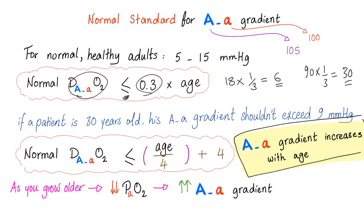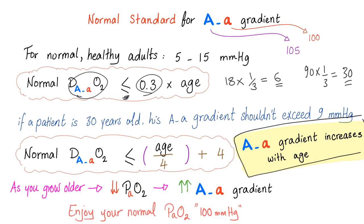There is another formula: age over 4 plus 4. As you grow older, your P(a)O2 decreases, therefore the AA gradient increases because the AA gradient is P(A)O2 minus P(a)O2. When you have decreased P(a)O2, we call this hypoxemia. When you grow very old, it's normal to have some hypoxemia in your blood.